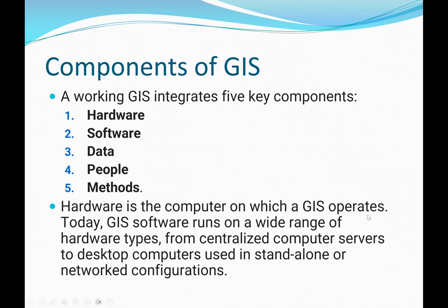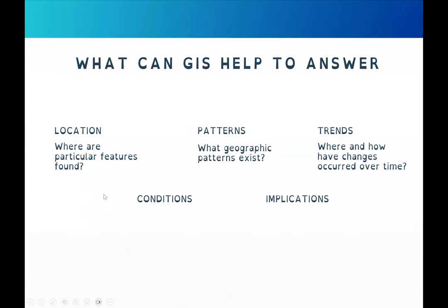Hardware is the computer on which the GIS operates. Today, GIS software runs on a wide range of hardware types, from centralized computer servers to desktop computers, to even a laptop or notebook. Software is the software that runs on the computer. We also need data — in this case, spatial data — and people, who are the users of both the software and hardware. The method refers to the techniques and algorithms implemented in the software. Again, the components of GIS consist of hardware, software, data, people, and methods.